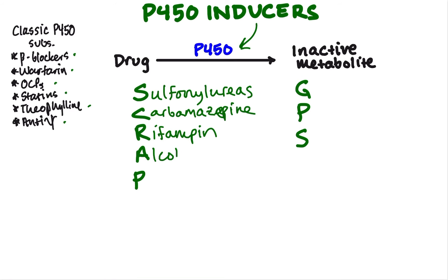A stands for alcohol — but this is important: when talking about alcohol as a P450-related substance, we're talking about chronic alcohol use, as in an alcoholic. With the inhibitors, we'll see that alcohol from binge drinking acts as an inhibitor. So you need to know the difference.